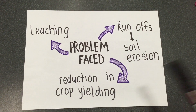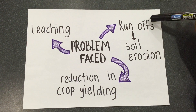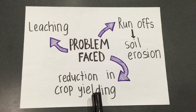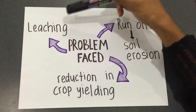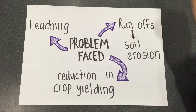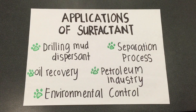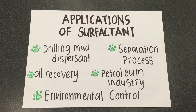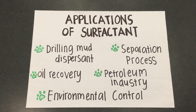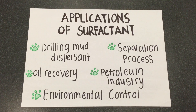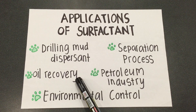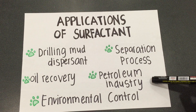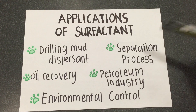Problems faced due to dry soil are runoffs that result in soil erosion, reduction in crop yielding, and leaching of agrochemicals and pesticides. Surfactants linked to adsorption are greatly used in chemical and agricultural industries. Applications of surfactant can be seen in drilling mud, dispersion, oil recovery, environmental control, petroleum industry, and separation processes.